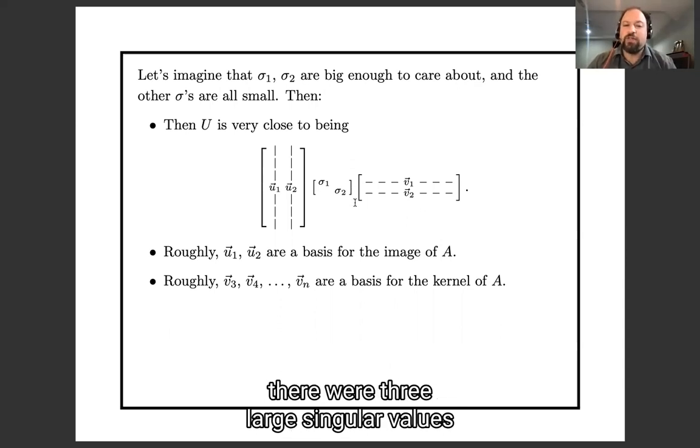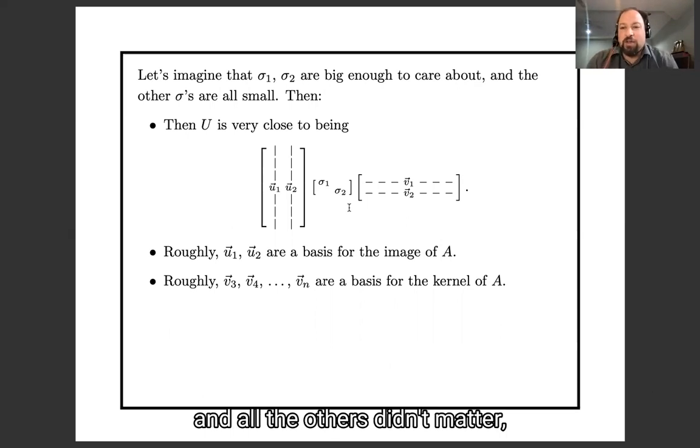And of course, nothing special about two here. If there were three large singular values and all the others didn't matter, then we get about three vectors surviving here and three vectors surviving here.